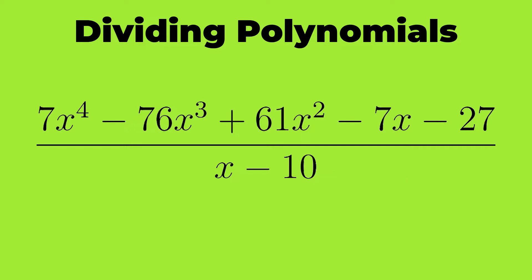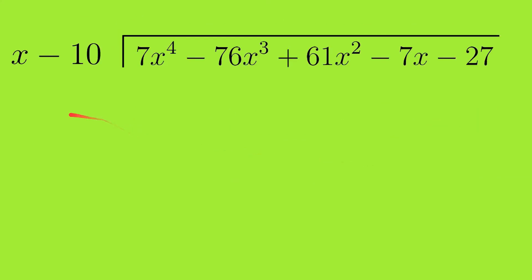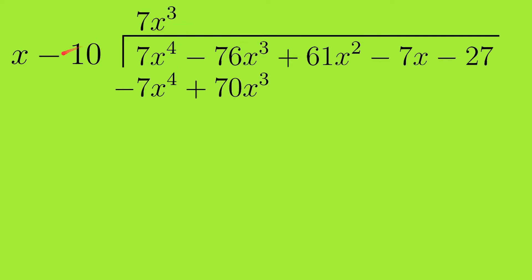We arrange the terms and compare the first term of the divisor and the dividend. x times 7x³ equals 7x⁴, so we write 7x³ in the quotient and multiply x minus 10 by 7x³, giving us 7x⁴ minus 70x³. We switch the signs to get minus 7x⁴ plus 70x³. After subtracting, we are left with minus 6x³, and 61x² comes down.